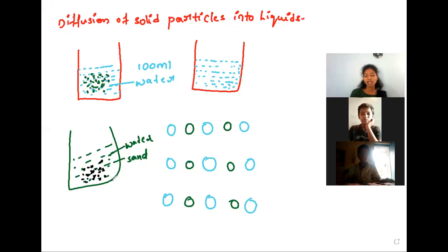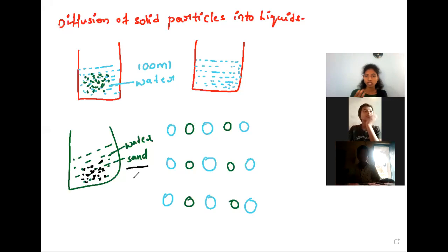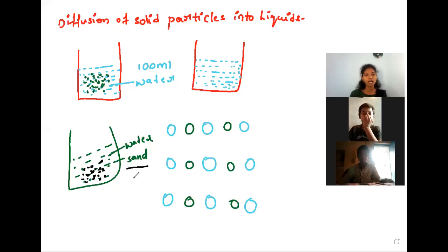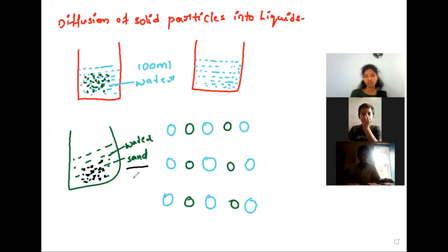So here we will not observe any diffusion property of sand particles in water. We can observe diffusion in sugar particles, salt particles, and some other solid particles. At that time when they dissolve, they occupy the spaces between the liquid particles — that is the reason we can observe diffusion property in liquids.